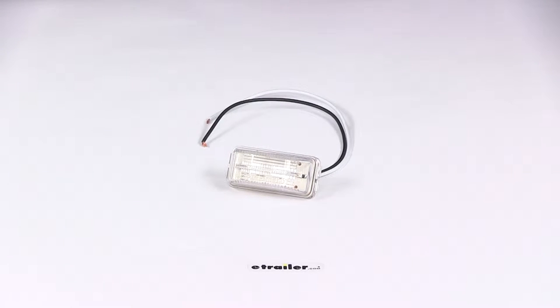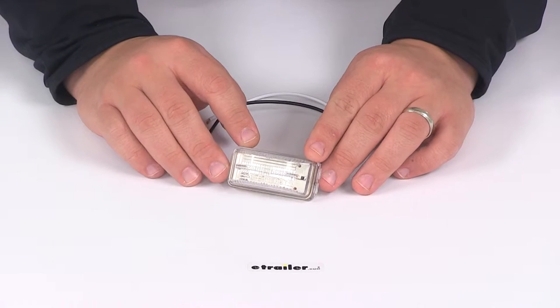Today we're going to be taking a look at the Optronics Mini LED License Plate Light. The LED light is going to illuminate your license plate for visibility in low light conditions. The unit is going to contain two white LEDs.